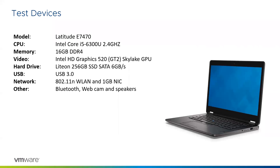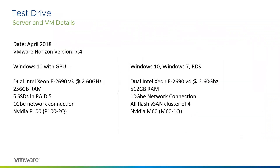We used a couple of these devices so we were only ever testing on the same type of device. In terms of the server, we used Test Drive — at the time it was based on Horizon 7.4, and when we did our second round in September it was probably up to 7.5 or 7.6. The virtual machines included Windows 10 with vGPU, Windows 10 without GPU, Windows 7, and a Remote Session Host based on Server 2016.